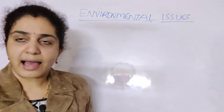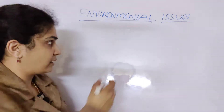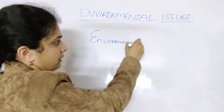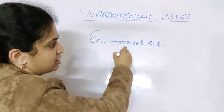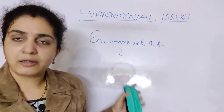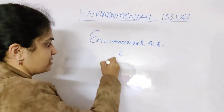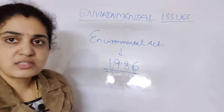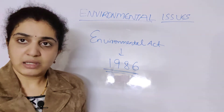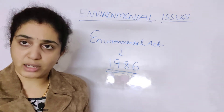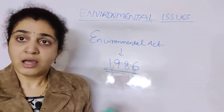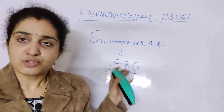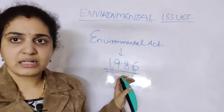There were numerous acts given. The first is the Environmental Act. This act says it should preserve the environment, and it came into existence in 1986. From this chapter, the years are very important — they will ask at least two or three questions about when each act was given.